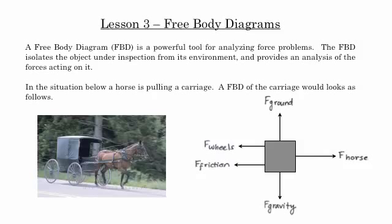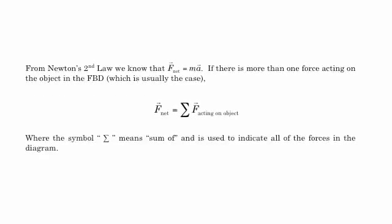Most of the time, the problems that you're going to be solving are going to explain what forces are present and which ones they want you to include in the free-body diagram. But what does all this mean? Well, we know from Newton's second law that F equals MA. But that F is not just one of the forces. It's all of the forces. So if there's more than one force acting on an object in a free-body diagram, we know that F net is equal to the sum of all forces acting on the object.